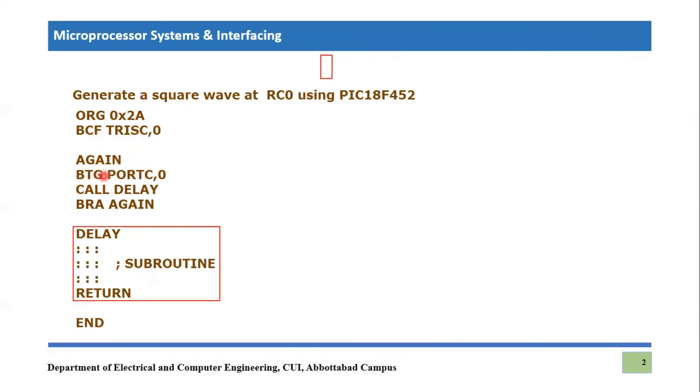Then what we do, bit toggle. This is a new instruction that we study, bit toggle. Bit toggle means if it is zero, we have to make it one. And if it is one, then we have to make it zero. So this is the function of toggle. And what we are toggling, we are toggling the port C at zeroth pin, which is the output pin.